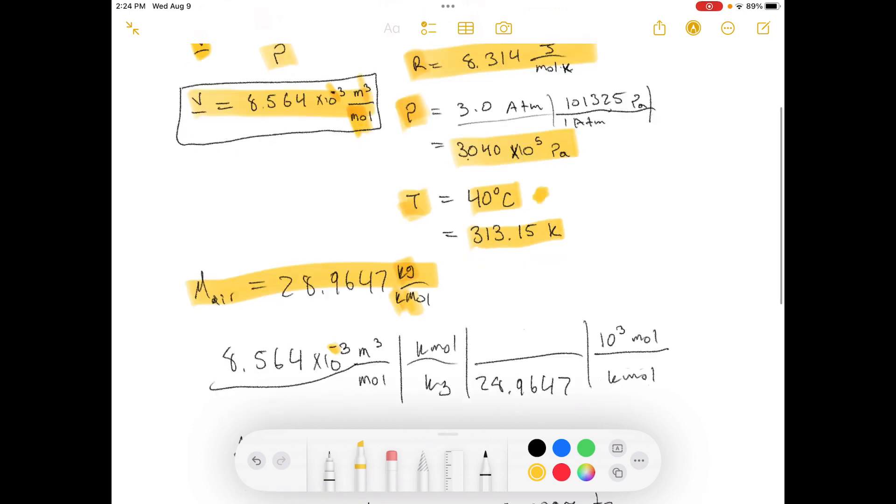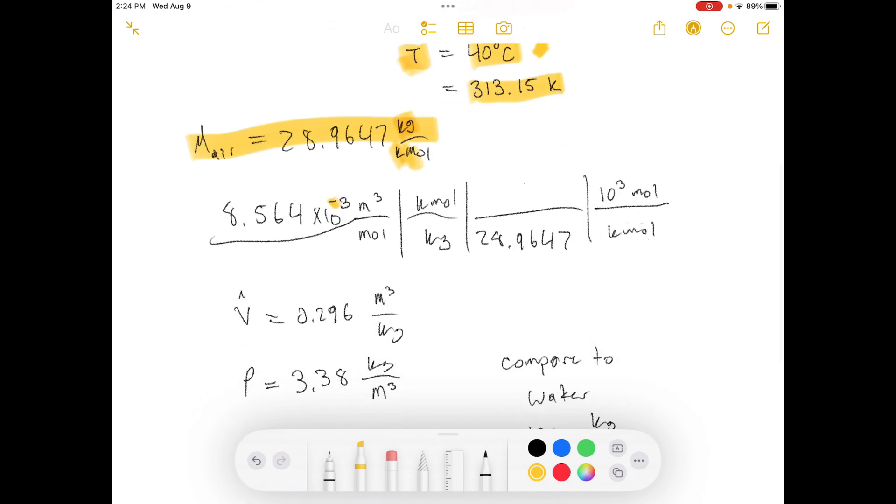Not kilomole. So we need to do a units conversion here. We're taking our moles and we're turning them into kilograms. Kilomole per kilogram is equal to this. And then for every kilomole, there are 10 to the three moles.